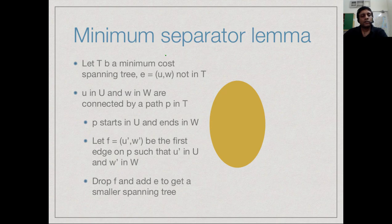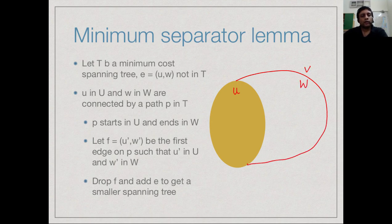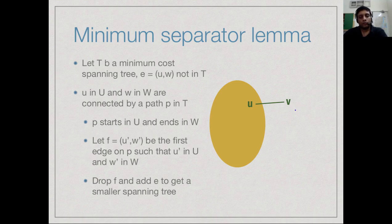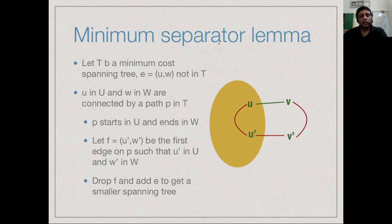To prove the lemma, suppose we have this partition with U and W. We look at the smallest edge connecting U and W. Suppose it is not in some minimum cost spanning tree T. Since T is a spanning tree, U must be connected to W in T, so there is a path from U to W in T which does not include this smallest edge — crossing the boundary via some other edge U-prime, V-prime.